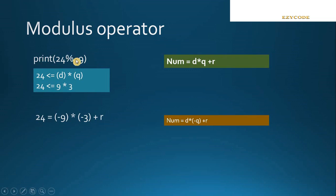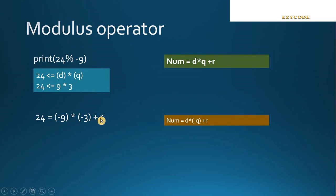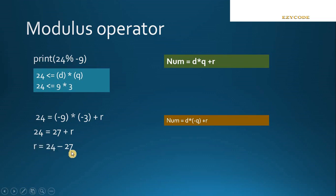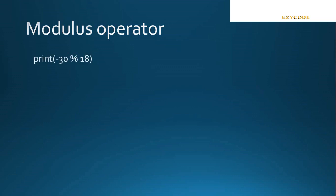Now we have to follow this rule: if the quotient contains negative values from the numerator or denominator, we take the denominator multiplied by minus Q plus R. We calculated Q is 3, so we put minus Q. The denominator is minus 9, so: minus 9 multiplied by minus 3, plus R. After calculation: 24 equals minus 9 times minus 3 is 27, plus R. So R equals 24 minus 27, giving R equals minus 3.